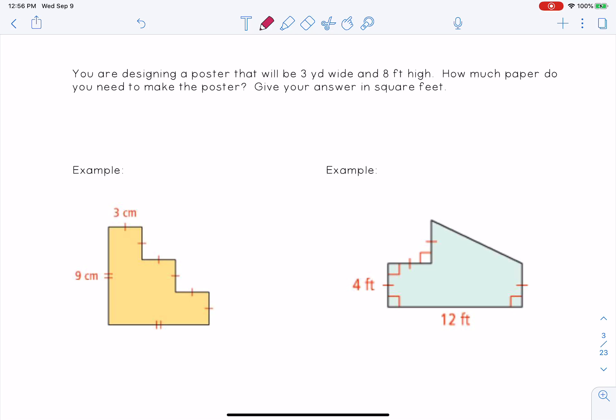Now our next problem says you're designing a poster that will be 3 yards wide and 8 feet high. How much paper do you need to make the poster? Give your answer in square feet. So this is really important where we need to pay attention to how we want to give our units. It says it's 8 feet high by 3 yards. A lot of people make the mistake of just multiplying 8 by 3, but notice this is in yards. So let's change it to feet. If there's 3 feet in a yard, then 3 yards is 9 feet. So now we're ready to say our area is 8 times 9, or 72 feet squared. So you always want to make sure you're multiplying things with the same units.